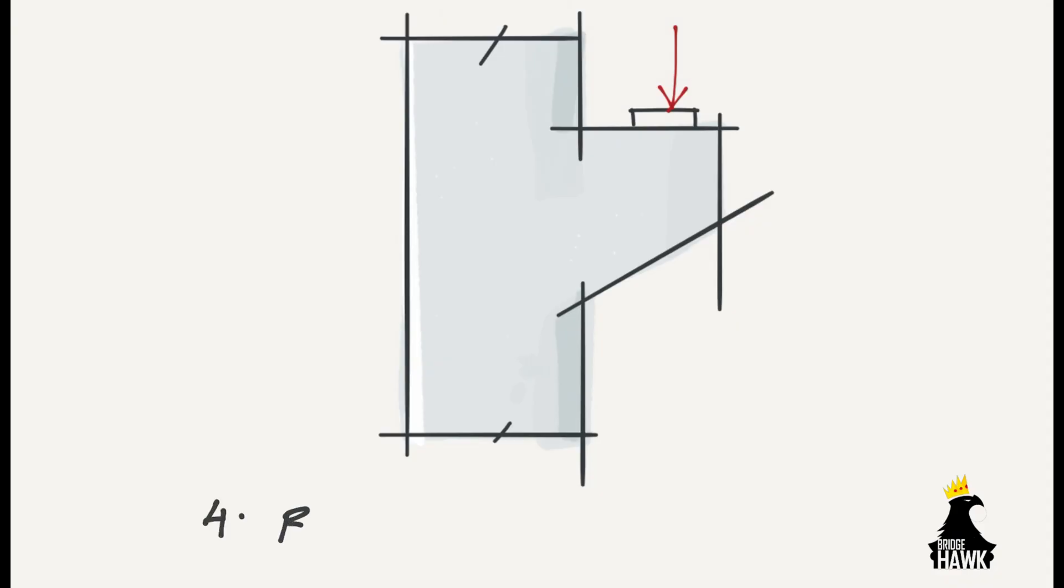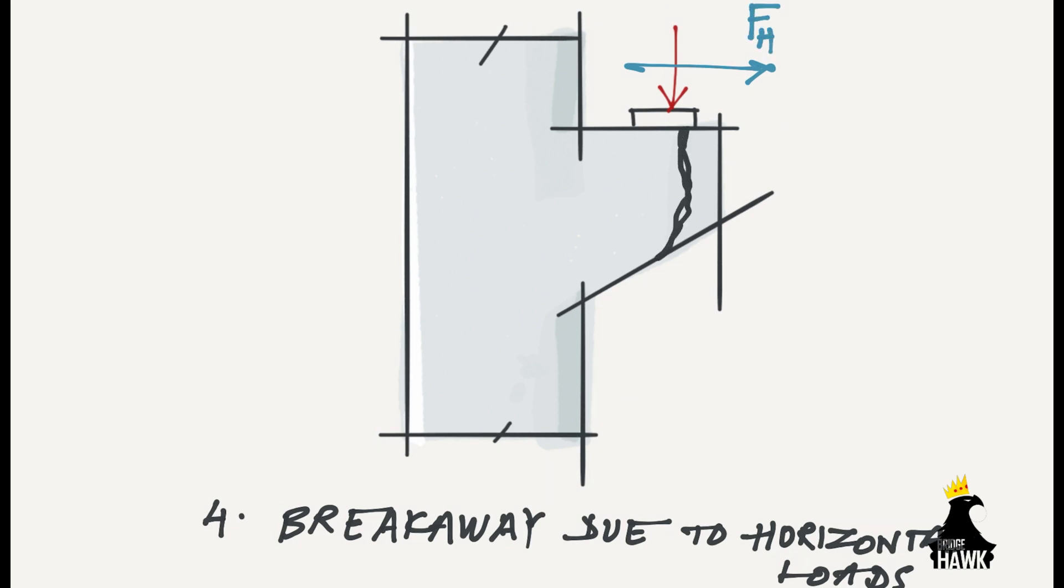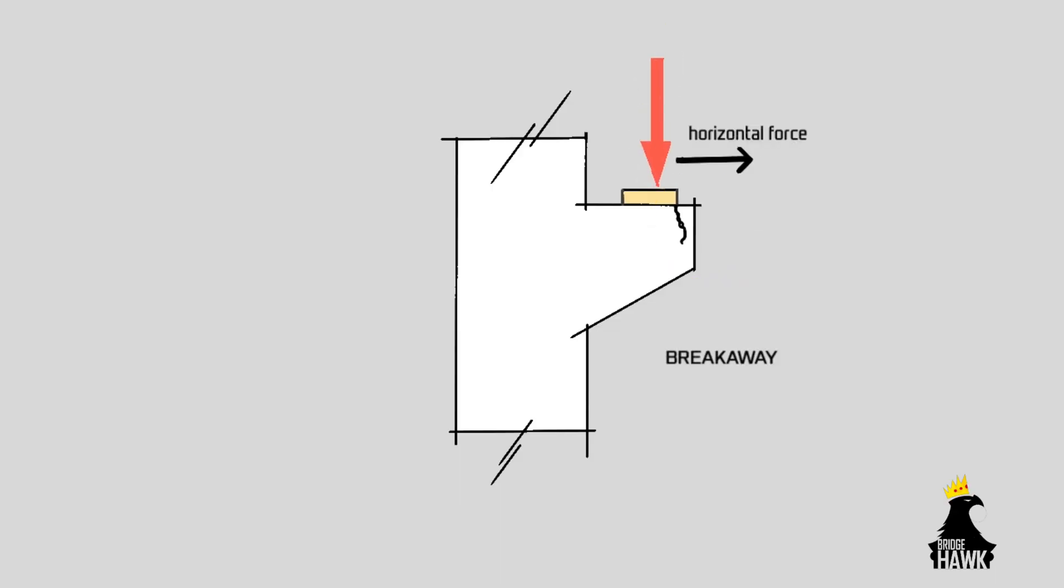Number four: Breakaway due to horizontal loads. This type of failure is somewhat similar to the previous example. The horizontal forces and the moment thus generated create a vulnerable portion of the member from the point of action of force. This little part of the corbel gradually develops cracks and ultimately chips off, causing the corbel to fail.